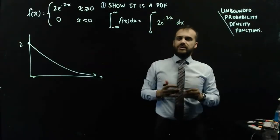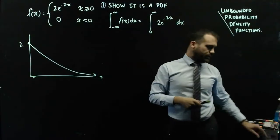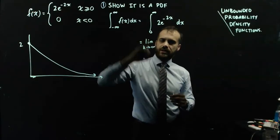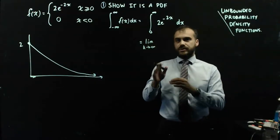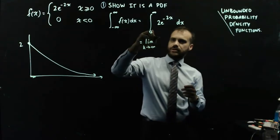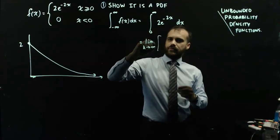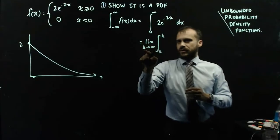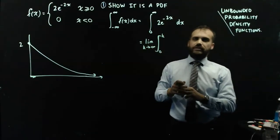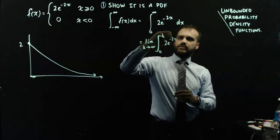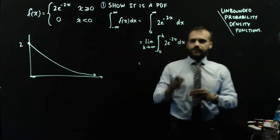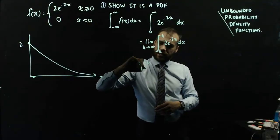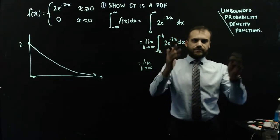This infinity is a problem, so we'll deal with it using limits. The limit as k approaches infinity — because we can't do maths with infinity, but we can do maths with numbers very close to infinity. I'm going to replace that infinity sign with k, integrating 2e to the negative 2x with respect to x from 0 to k.